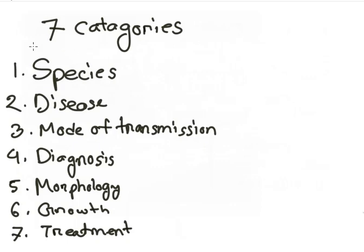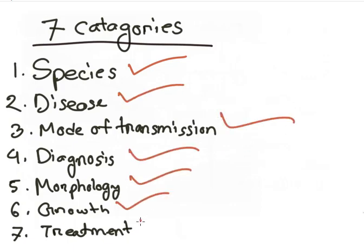Now medically important Spirochetes will be presented in a systematic way which have the following categories: species, disease, mode of transmission, diagnosis, morphology, growth and treatment.